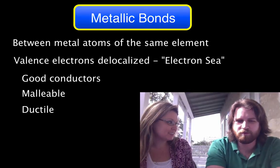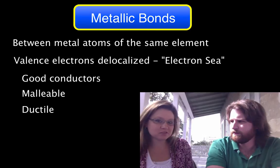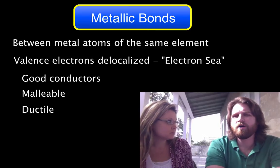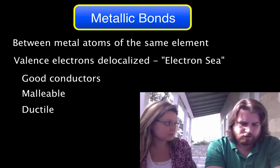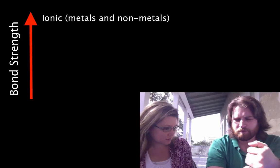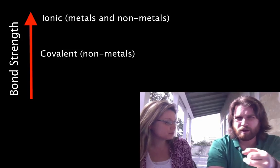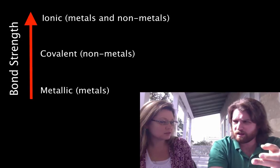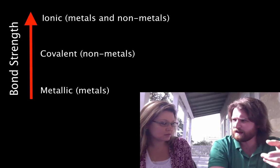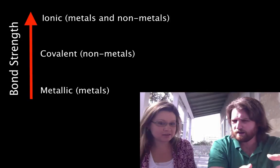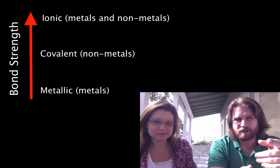And they're ductile. Ductile — what does that mean? Ductile means to roll or pull into a thin wire. So to recap: we've got the strongest bonds, ionic bonds, between metals and nonmetals. Covalent bonds are the second strongest, between nonmetals. And then we've got metallic bonds, which are only between metals of the same element, and those are the weakest ones. Exactly. Hope you guys got it too.